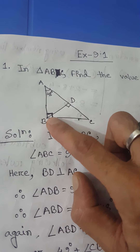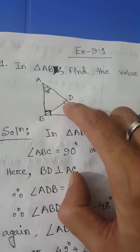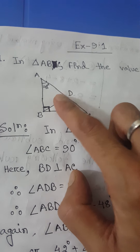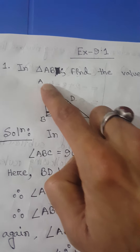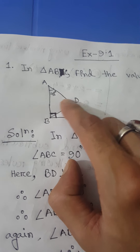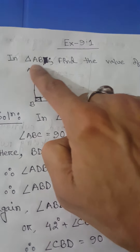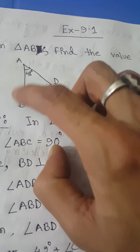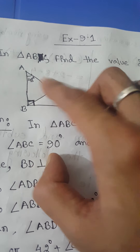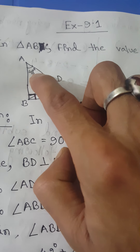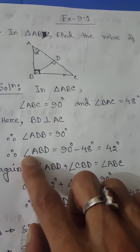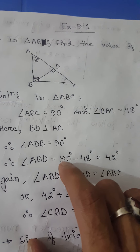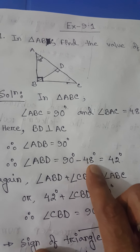Here BD is perpendicular to AC. Since this is the perpendicular sign, both sides represent 90 degrees. So we can write angle ADB is equal to 90 degrees. Now if we have to find angle ABD, in triangle ABD we know there is 180 degrees. This angle is 48 degrees and this angle is 90 degrees.